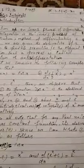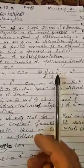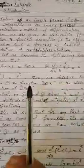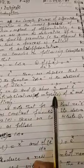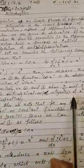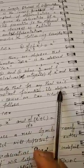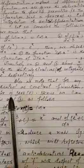Let us consider the following examples. We know that the derivative of sin x is cos x. The derivative of x³/3 is x². The derivative of eˣ is eˣ. We observe that cos x is the derived function of sin x, and similarly x³/3 and eˣ are the anti-derivatives, or integrals, of x² and eˣ respectively.